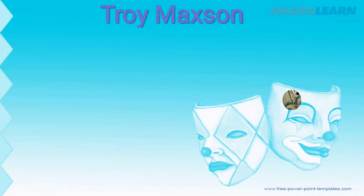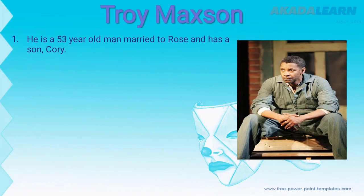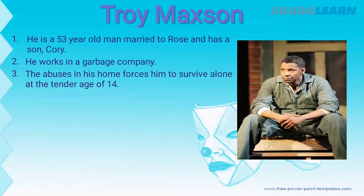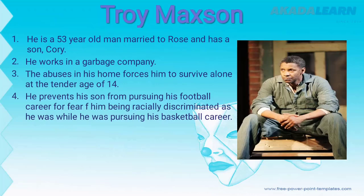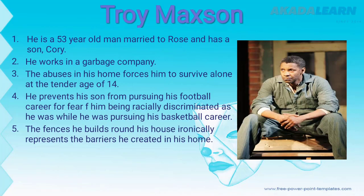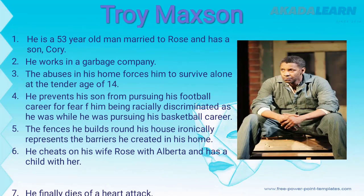The first character we'll be looking at is Troy Maxson. He's a 53-year-old man married to Rose and has a son Cory. He works in a garbage company. The abuses in his own personal home forced him to survive alone at the tender age of 14. He prevents his son Cory from pursuing his football career for fear of him being racially discriminated, as he was while pursuing his own career in baseball. The fences he builds around his house ironically represent the barriers he created in his home. He cheats on his wife Rose with Alberta and has a child with her. He finally dies of a heart attack.